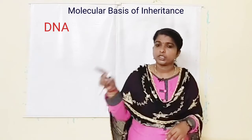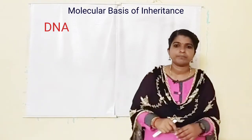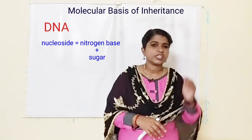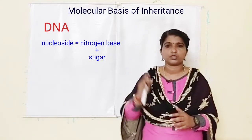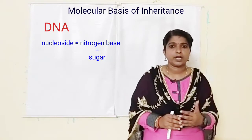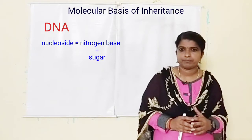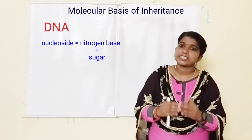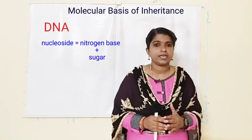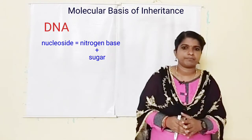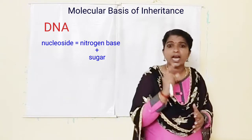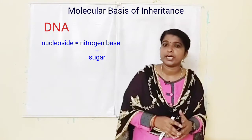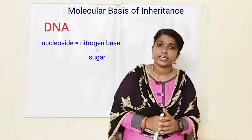When a nitrogen base combines with a pentose sugar through an N-glycosidic bond, it becomes a nucleoside. For example, if the base is adenine it becomes adenosine or deoxyadenosine; if guanine, it becomes guanosine or deoxyguanosine; if cytosine, it becomes cytidine or deoxycytidine; if uracil (present only in RNA), it becomes uridine; and thymine (present only in DNA) becomes deoxythymidine.